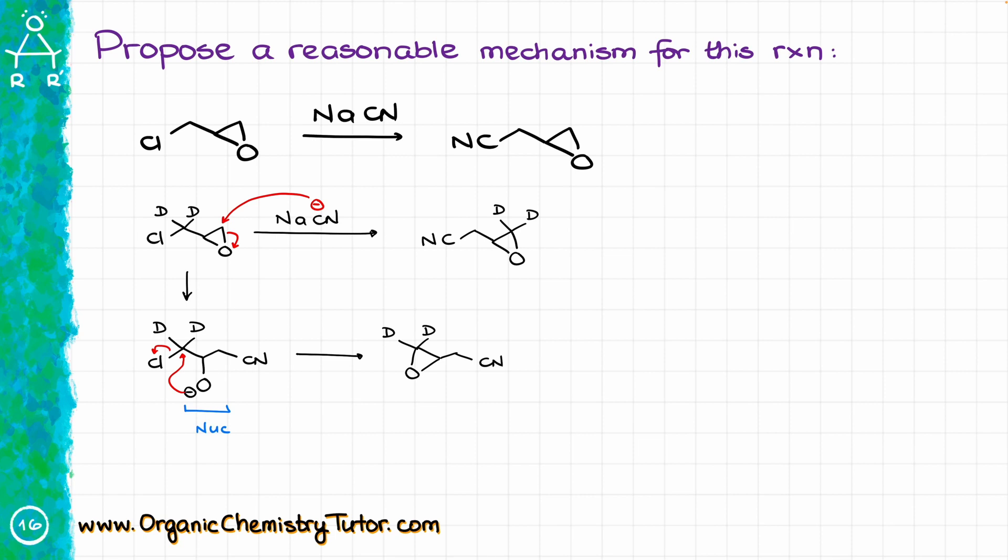There are of course cases where it doesn't work, but in the majority of cases, epoxide will open before the SN2 reaction. So for instance, if I took something like this as my starting material, then in this case, cyanide is going to open my epoxide faster than the reaction with the carbon containing the chlorine, giving me an intermediate that looks like that.